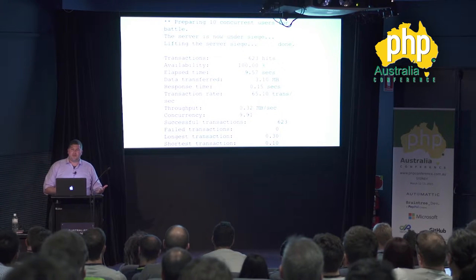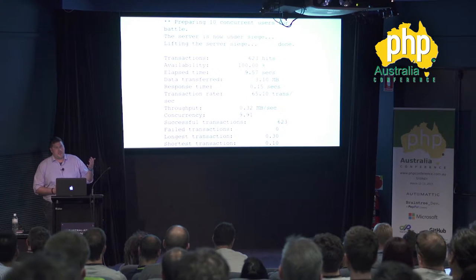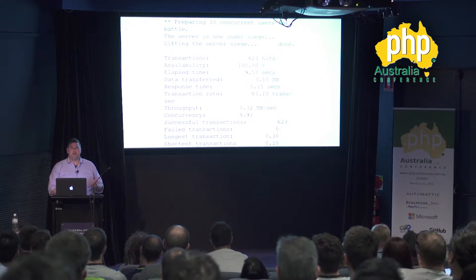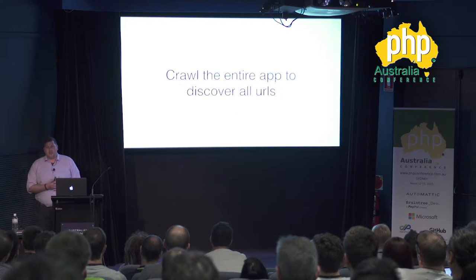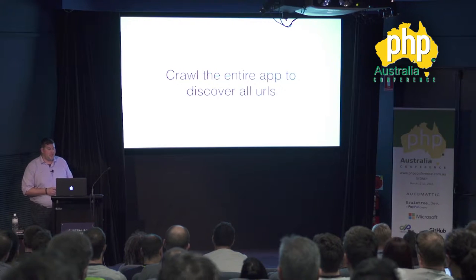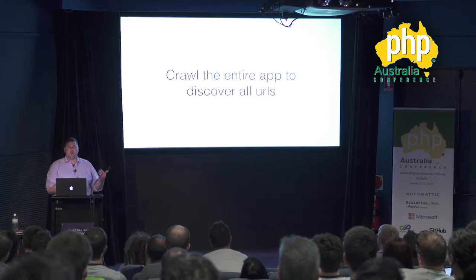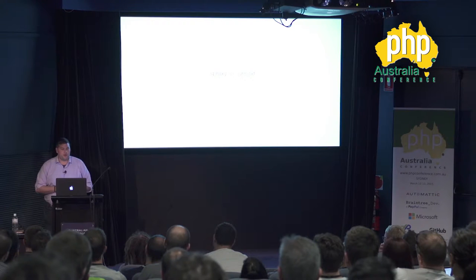That's fine for load testing a static homepage, but most applications have many endpoints with different performance characteristics. Your homepage may be highly cached and fast, but you need to script scenarios like checkout and maintain state. You also need to discover all URLs in your application. If you're using Symfony you can dump the router, but for other frameworks you can emulate a search engine spider to recursively crawl all links and produce a unique list — covering login, logout, checkout, and more.